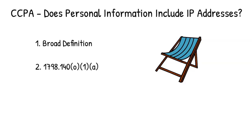But rant aside, what does section 1798.140, subsection (o)(1)(A) say? It says personal information includes identifiers such as a real name, alias, postal address, unique personal identifier, online identifier, cookies, internet protocol address, email address, and so on. So 'internet protocol address' — that's an IP address — is specifically called out in the law.